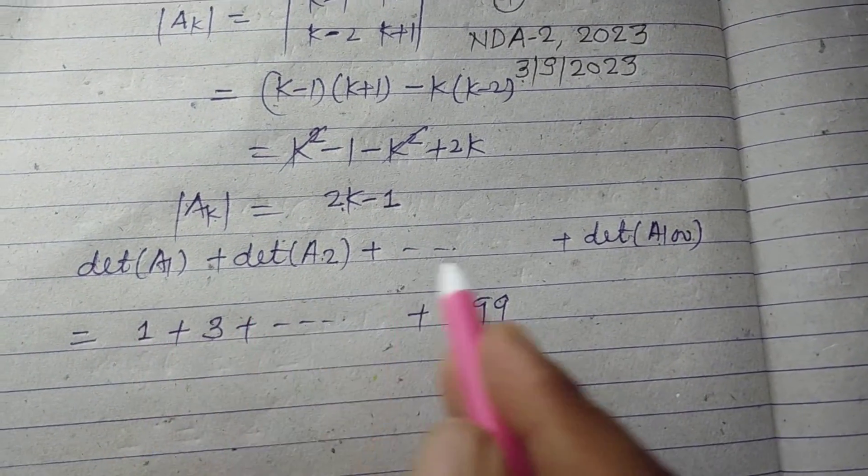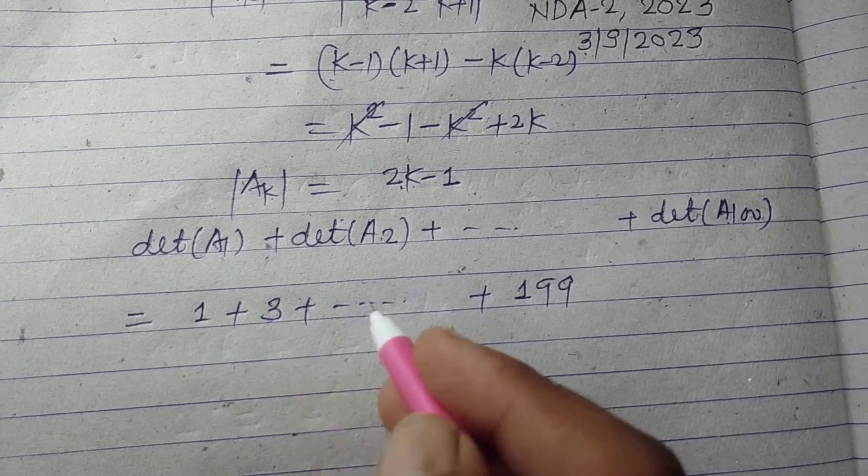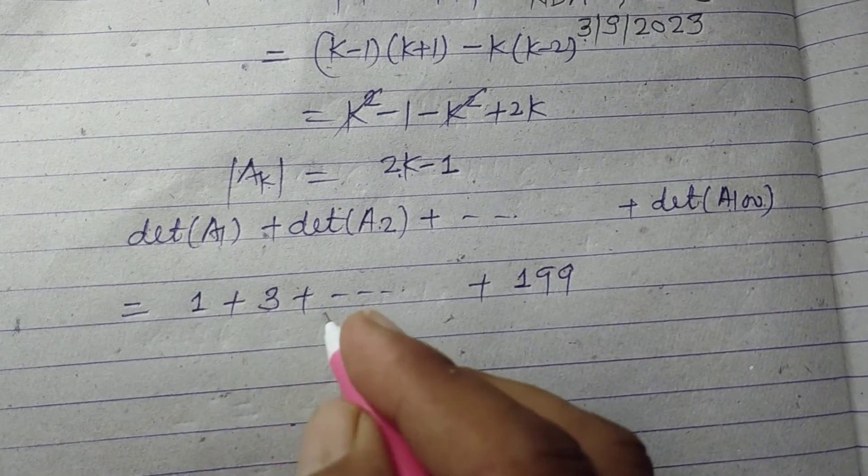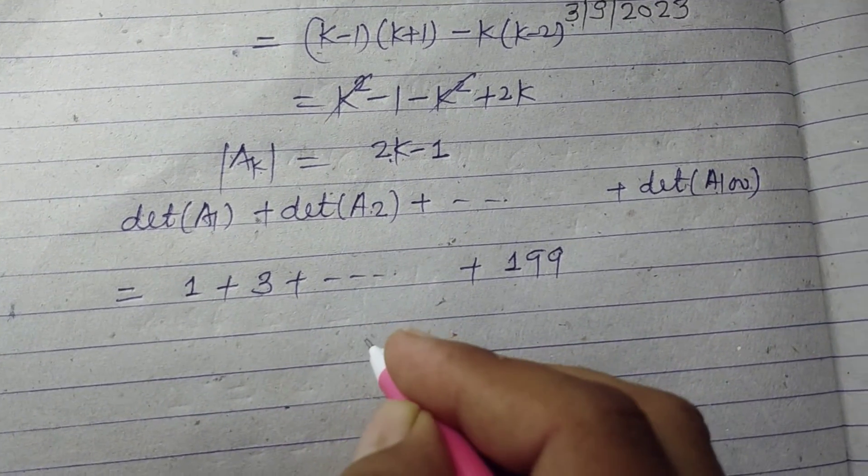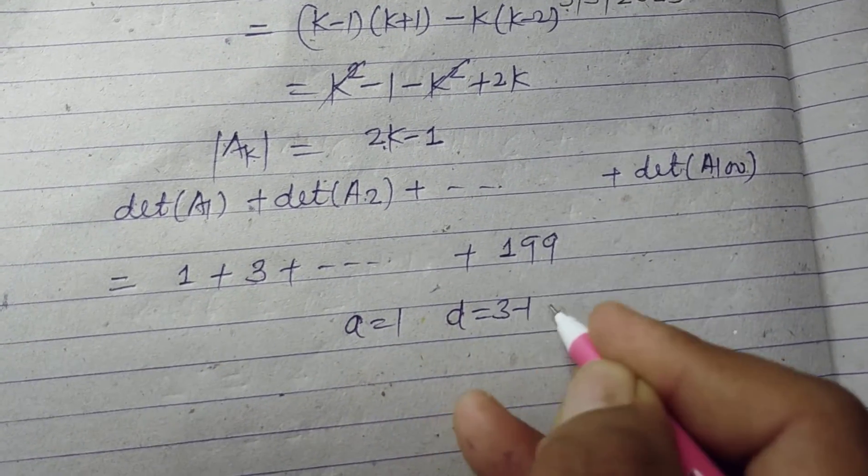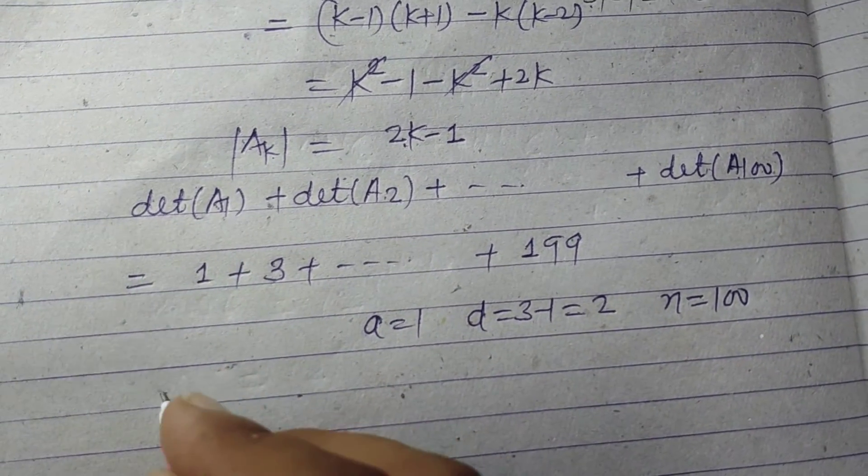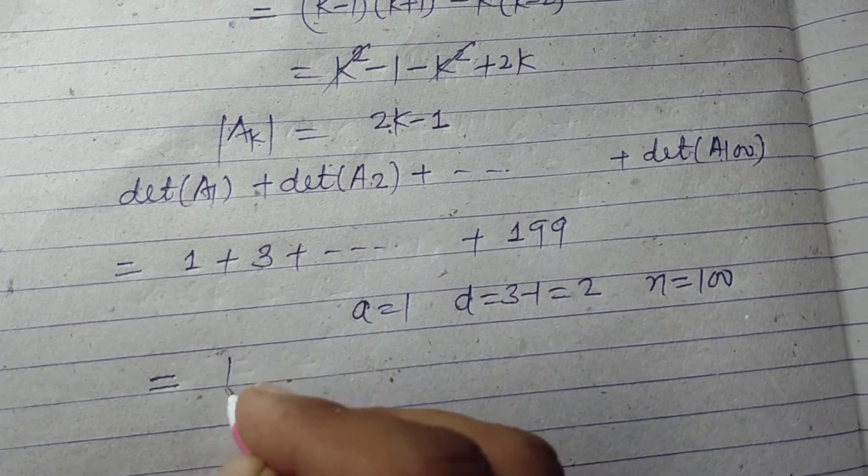So these are 100 terms: the sum of 100 odd numbers. This is an arithmetic progression of odd numbers. So a is 1, d is 3-1 which equals 2, and number of terms is 100.